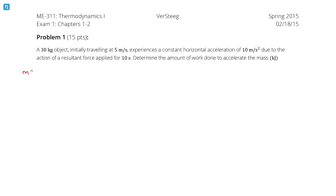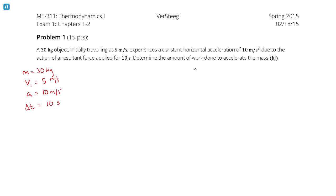Let's pick out the pieces of information. The mass of our object is 30 kilograms. The initial velocity, v1, is 5 meters per second. There is a constant acceleration of 10 meters per second squared, and the time period is 10 seconds long.